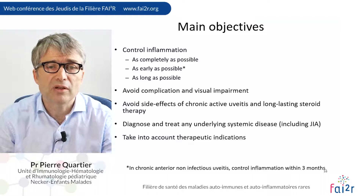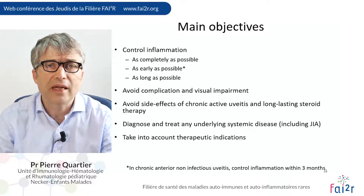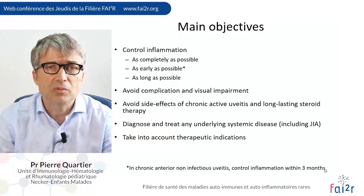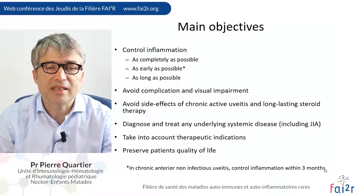The main objectives are to control inflammation as quickly, as early, and as long as possible; to avoid complications of visual impairment; and to avoid side effects of chronic active uveitis and long-lasting steroid therapy. In particular, if children require more than two steroid drops over six months or more than three drops over three months, systemic therapy should be discussed. The underlying systemic disease must be treated and the patient's quality of life preserved.